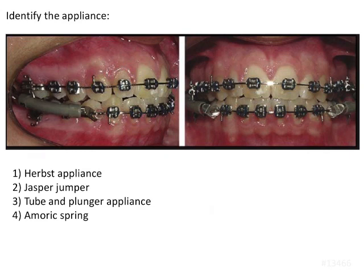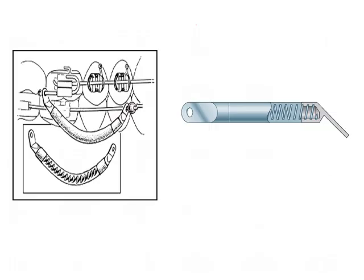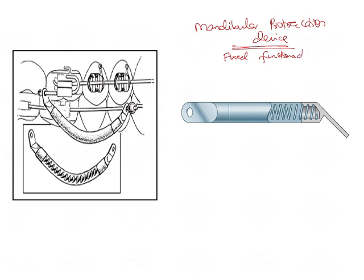The appliance shown in the image is a Jasper Jumper. Let's have a closer look — the Jasper Jumper is a mandibular protraction device. It is a fixed functional appliance which brings about mandibular protraction, and it is a flexible type of fixed functional appliance.